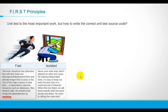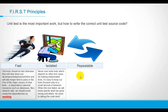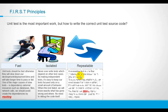The third principle is repeatable. A repeatable test is one that produces the same result each time we run it. To accomplish repeatable tests, we must isolate them from anything in the external environment not under our direct control. In those cases, feel free to use mock objects.